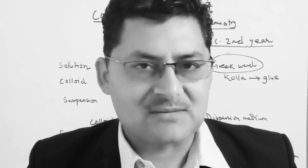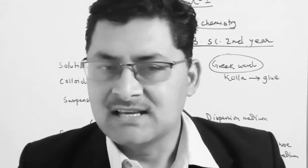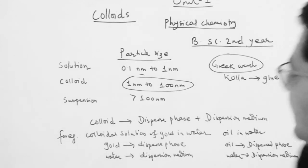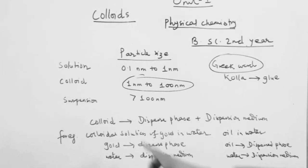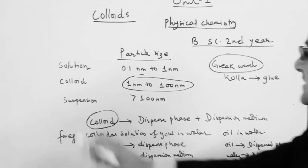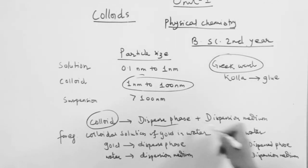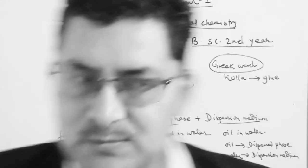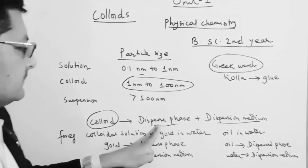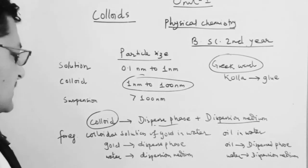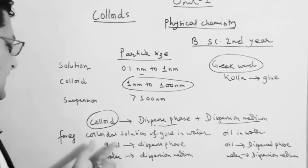We have to understand the example of colloid. Colloid is a mixture of two things. Just as a solution has solvent plus solute, a colloid is called dispersed phase and dispersion medium.